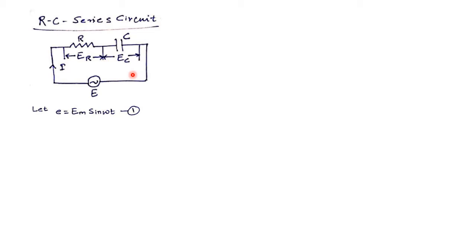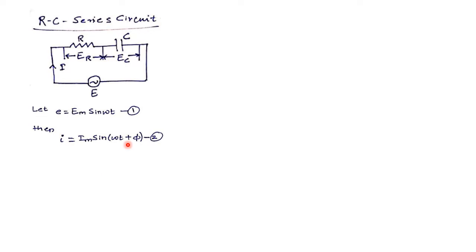The phase angle between voltage and current will lie between 0 and 90 degrees. If it is pure resistive in nature it will be 0 degrees; if it is pure reactive in nature it will be 90 degrees — either leading or lagging depending upon whether it is a capacitor or inductor respectively. So here the current I will be leading the voltage E by an angle less than 90 degrees. I consider it to be φ, therefore I equals IM sin(ωt + φ) — plus φ indicates the leading nature of current.